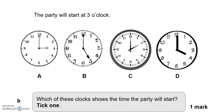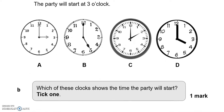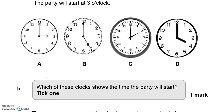The party will start at three o'clock. Which of these clocks shows the time the party will start? That is clock A — the short hand pointing at 3 and the long hand pointing at 12, so that is three o'clock.